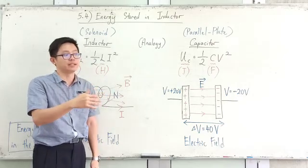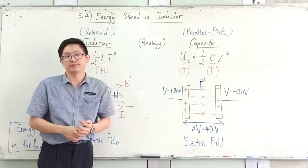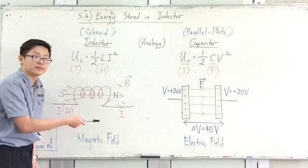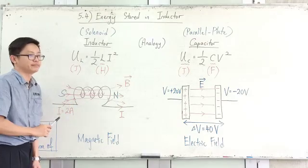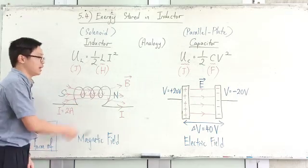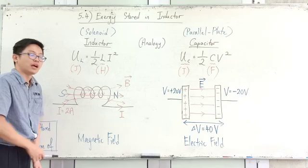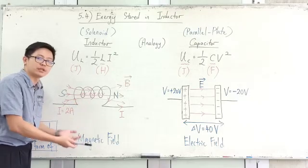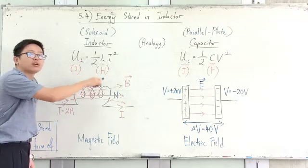When current passes through the solenoid, does it store any energy? Yes. When current passes through the solenoid, it has a magnetic field. That magnetic field is actually the energy stored in the solenoid. Energy is stored in the form of magnetic field — got magnetic field means got energy stored. No magnetic field means no energy stored. To have a magnetic field in the solenoid, you must have current.